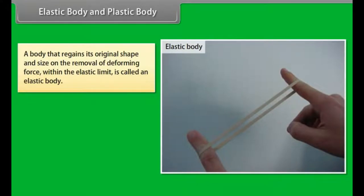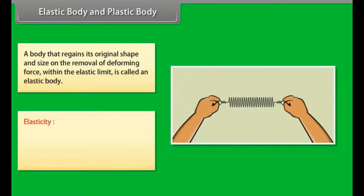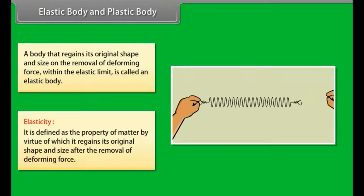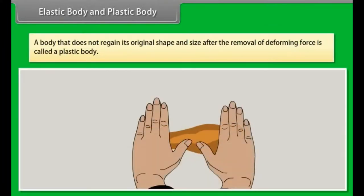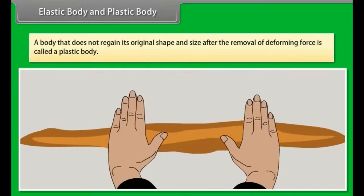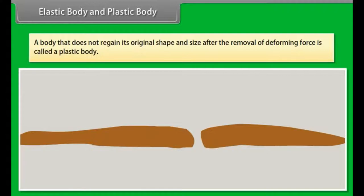A body that regains its original shape and size on the removal of a deforming force within the elastic limit is called an elastic body. Elasticity is defined as the property of matter by virtue of which it regains its original shape and size after the removal of a deforming force. A body that does not regain its original shape and size after the removal of a deforming force is called a plastic body.